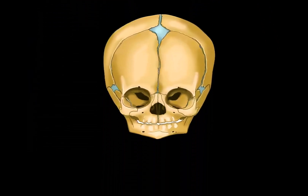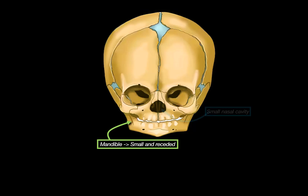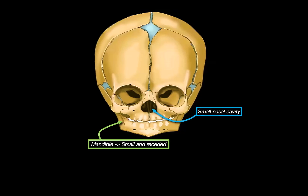The mandible is small, and it's positioned in a way that allows forward movement during breastfeeding. The nasal cavity is also small, and so are the airways.